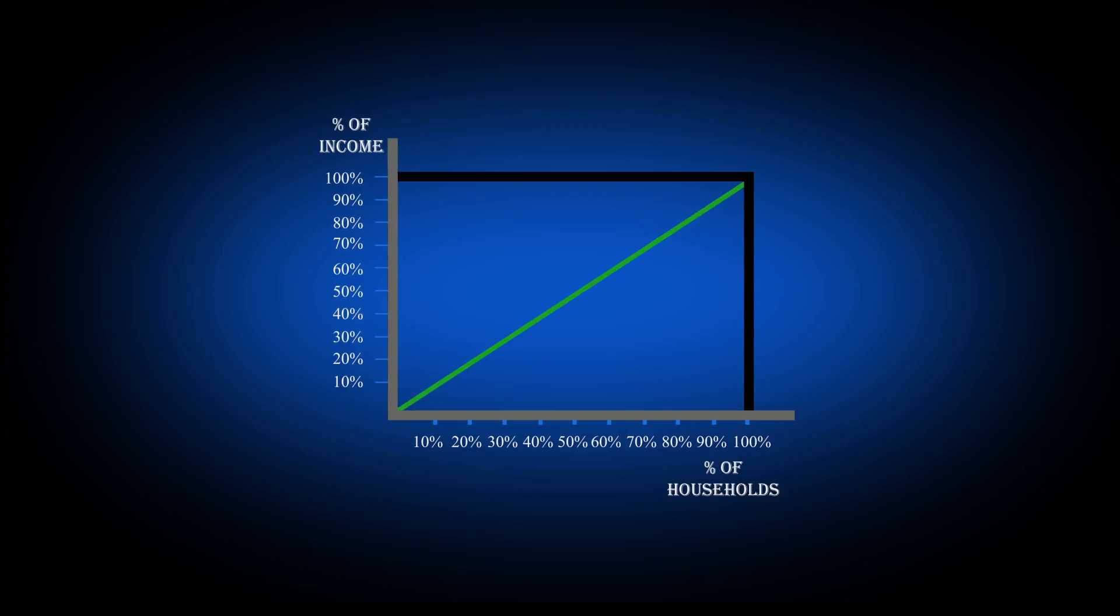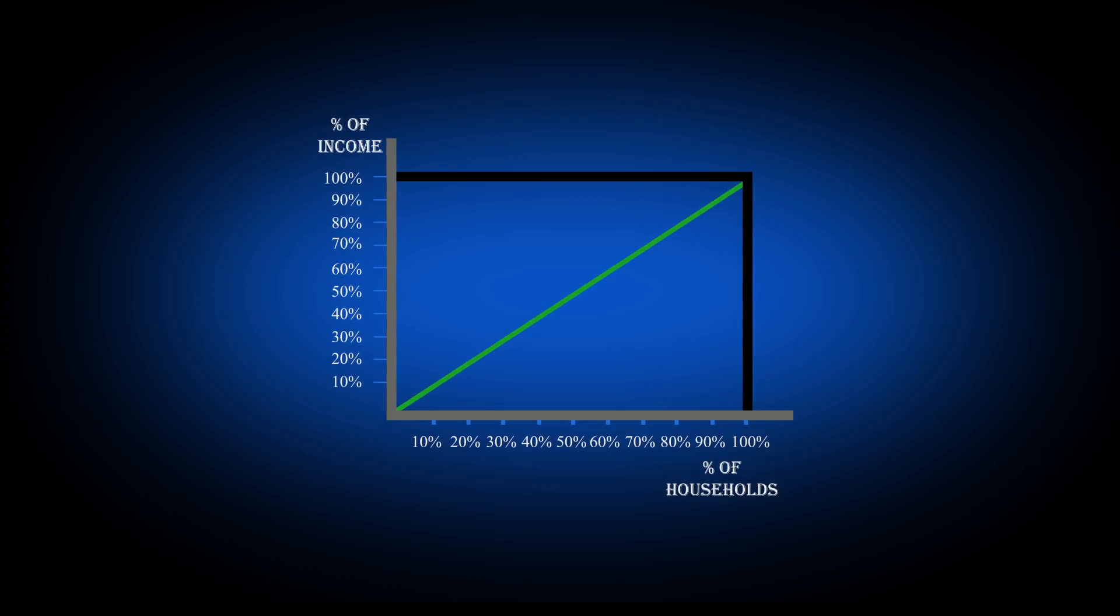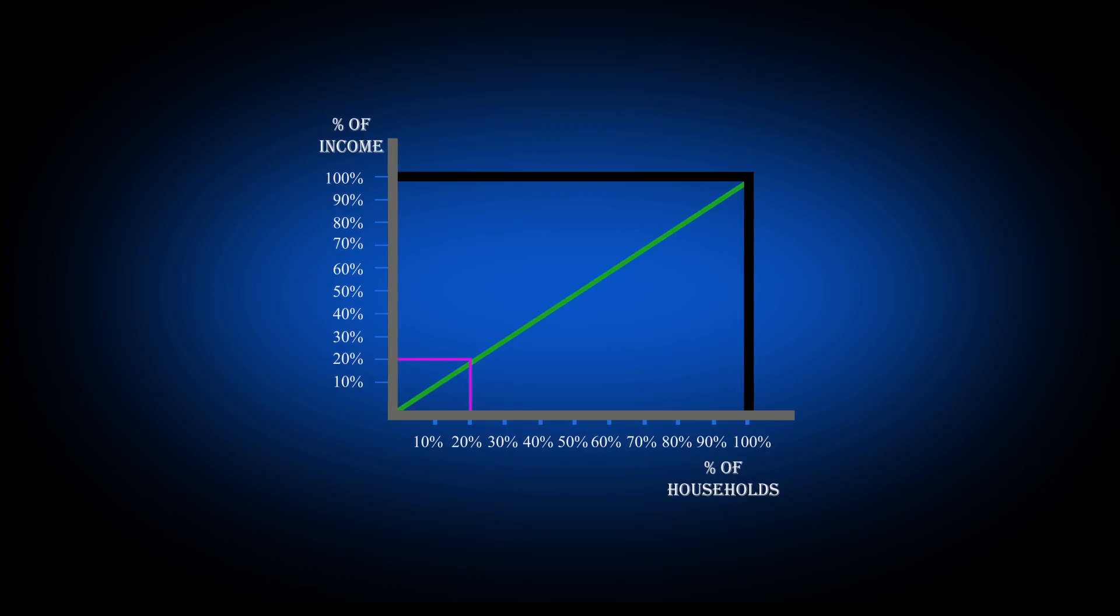We will then draw the line of equality which would be functioning only if we live in a utopian world because it indicates that a certain percentage of households would be holding an equal percentage of income, which in our case is 20% of the households holding 20% of the income.